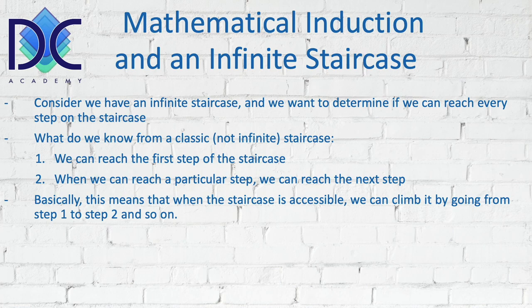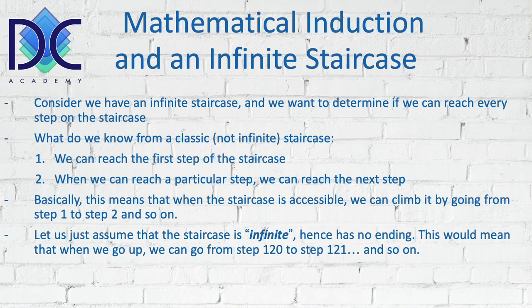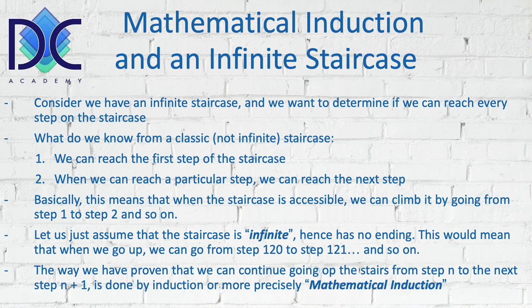Once we can get to the first step, we can climb the staircase by going from step one to step two, and so on. When the staircase is infinite — like the positive integers — we go from step to step indefinitely. For example, we arrive at step 120 and can go to step 121, 122, and so on. Once we reach one step, we can always go to the next step.